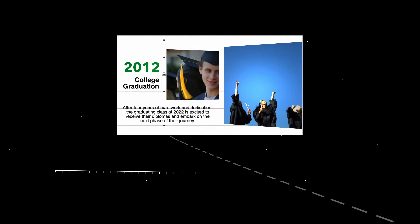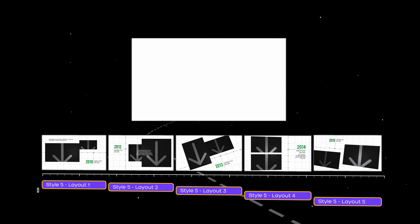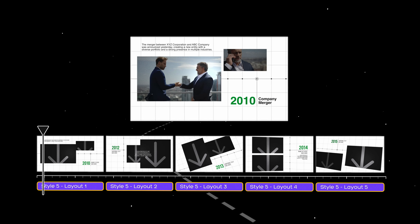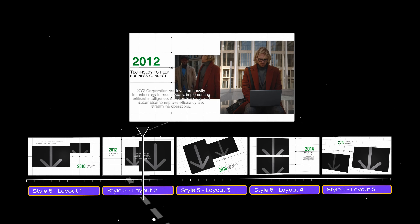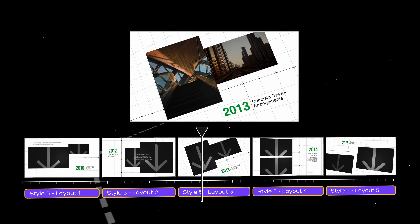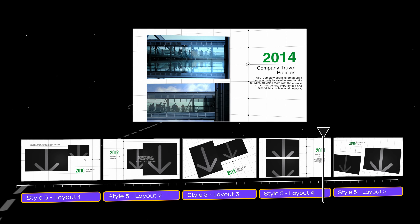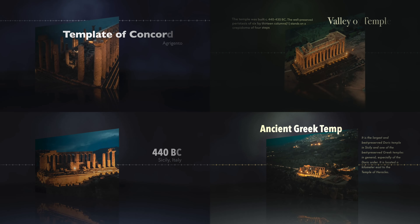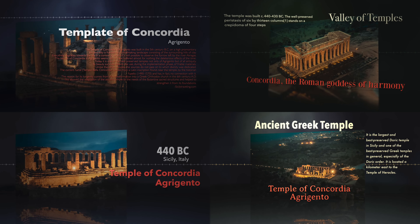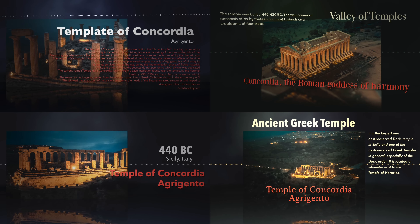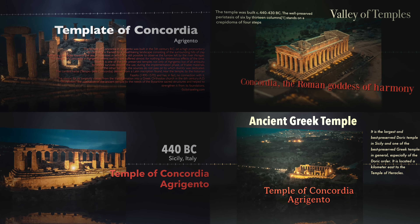Each timeline style has five different layout options. All presets are modular, which allows for a seamless transition from one layout to another of the same style. Simple controls make it easy to quickly and effectively make style and layout changes.